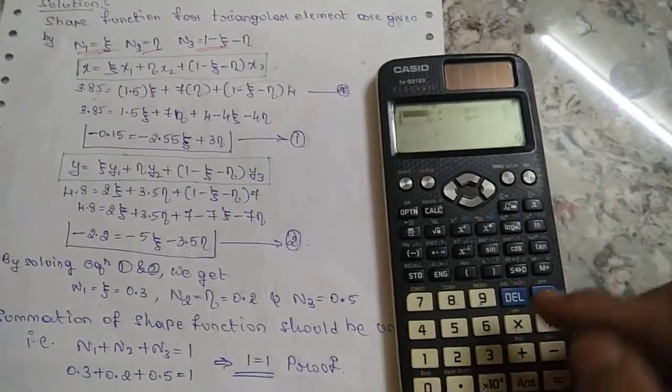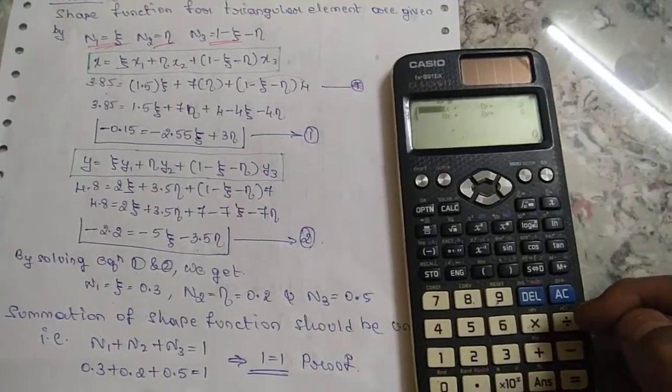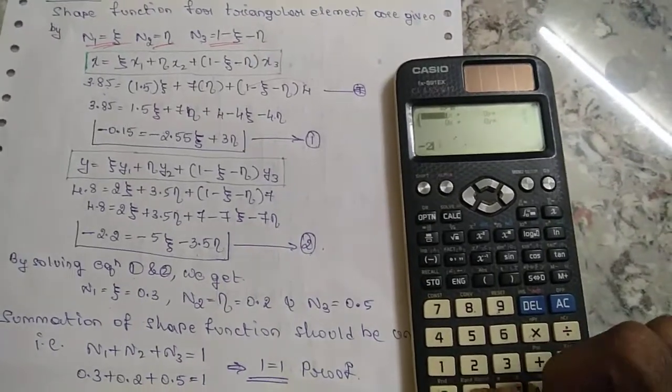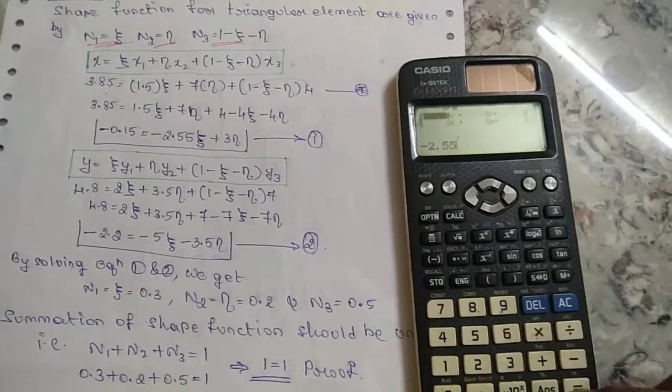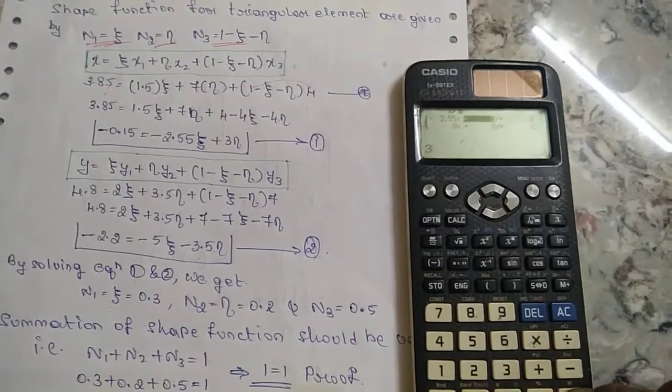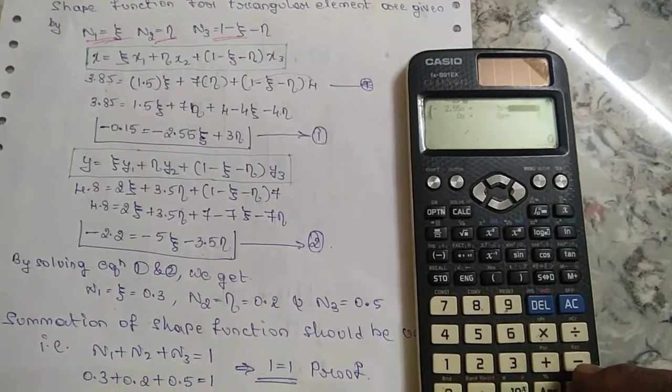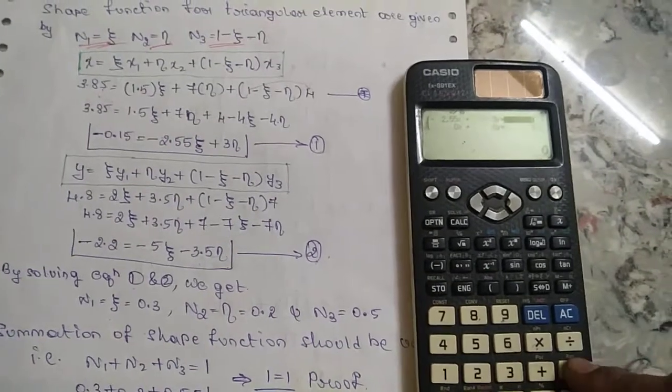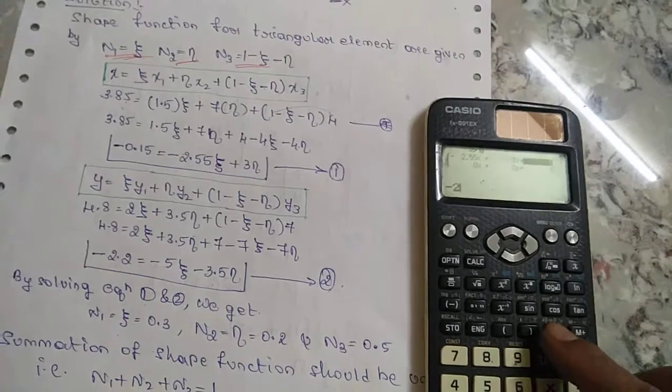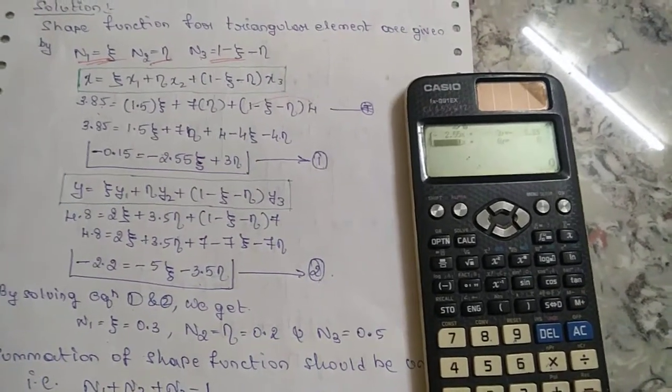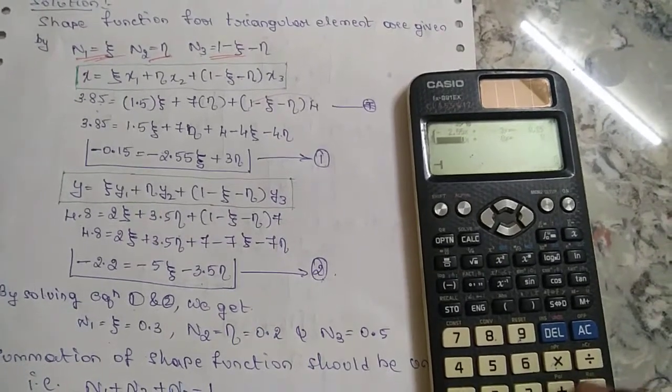We have simultaneous equations, so click 1. How many unknowns? Two unknowns, so click 2. Initially substitute the value -2.55, then +3. If it is minus, you have to press minus.